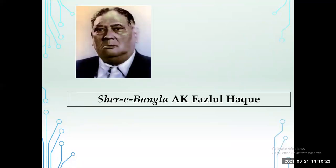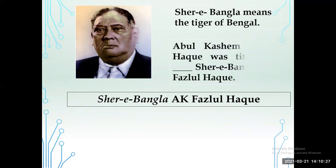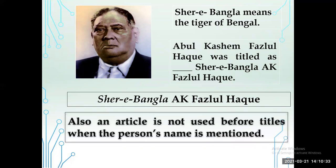Rule 7: 'Sher-e-Bangla' means 'the tiger of Bangladesh.' He was titled as Sher-e-Bangla. Here also an article is not used before titles when the person's name is mentioned. If the person's name is mentioned, we have to omit any article.